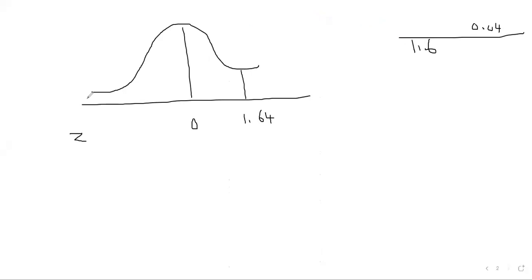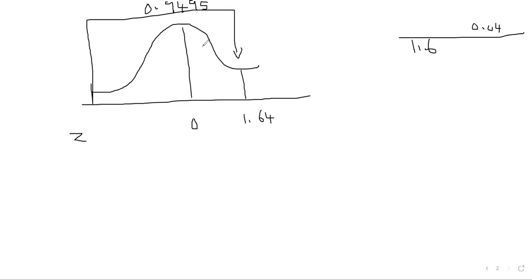So the reading from the far left up to z = 1.64 is 0.9495. If you use the half table instead, the reading from the midpoint to 1.64 would be 0.4495 — simply subtract 0.5. So both tables give the same underlying information; the half table just removes the default 50%.